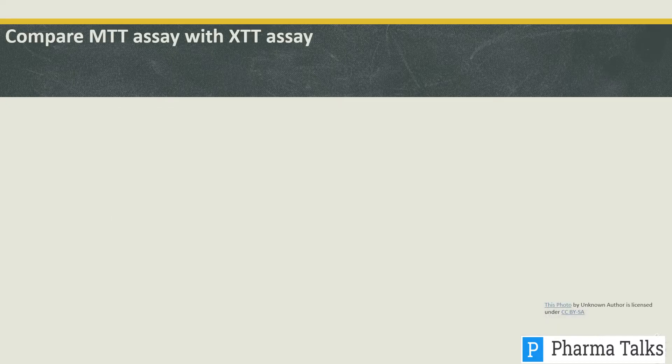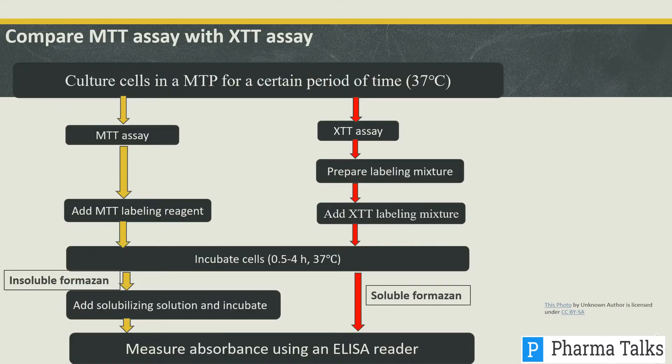In comparison with the XTT assay, an XTT assay labeling mixture is prepared, and the formazan produced is soluble. Percent cell viability is then evaluated.